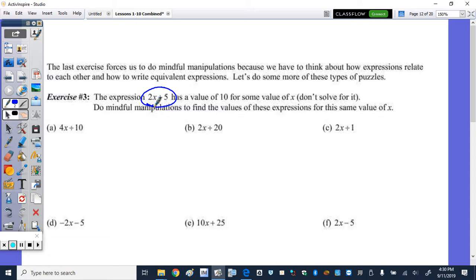So if we take, as we said, 4x plus 10 is equal to 2 of these. So if 2x plus 5 is equal to 10, replace this with a 10, and this is multiplication. So 2 times 10 is 20. See if you can recognize another multiple.